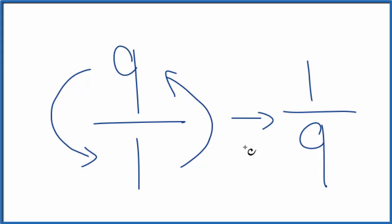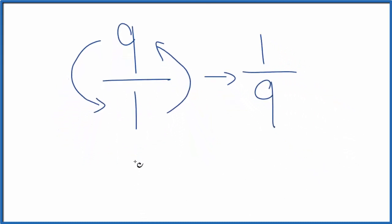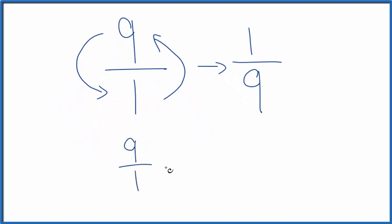And we can check this too. We can take the original number, that nine over one, and multiply that by the reciprocal we just found, one over nine. If we get one, that means we took the reciprocal correctly.